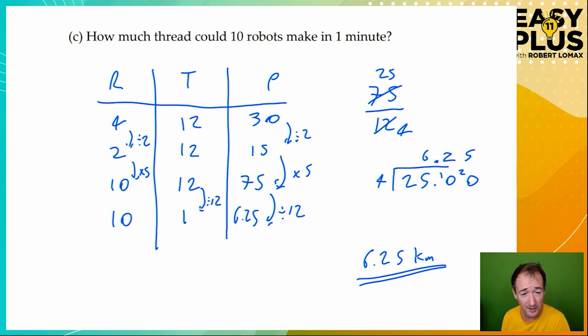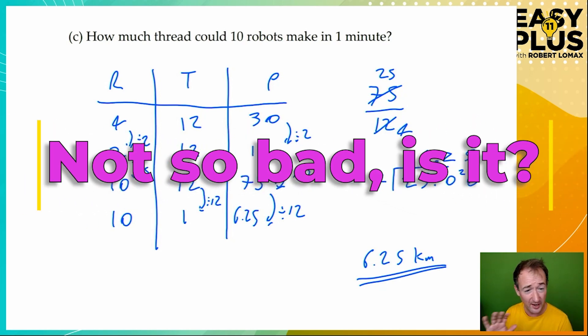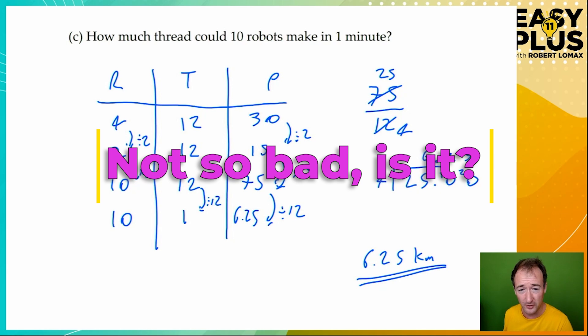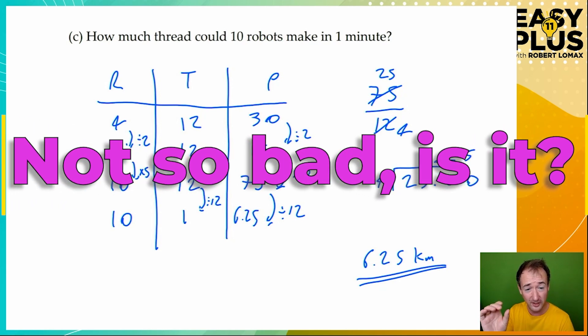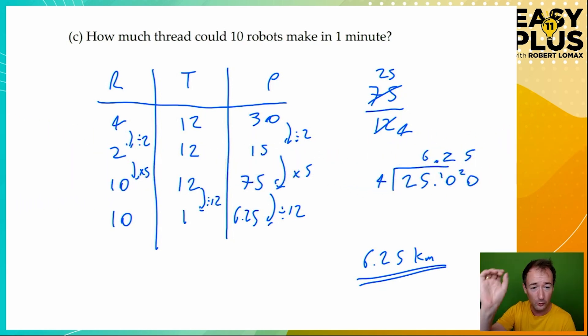So the answer is 6.25 kilometers because the length of thread is being measured in kilometers. So again, the numbers here look horrendous. But if you just follow the method through with the table and you don't make any silly mistakes, the right answer is going to pop out at the end of it. You can use the same method for any question of this sort. Just pay attention at each stage to whether you need to multiply or divide.